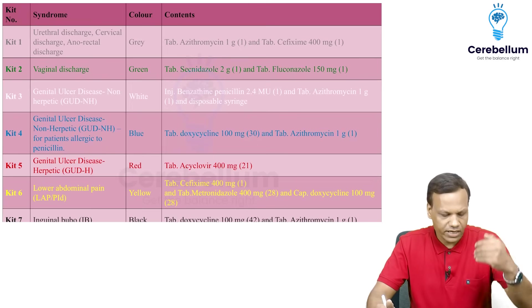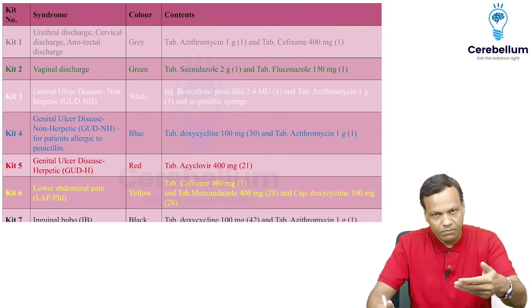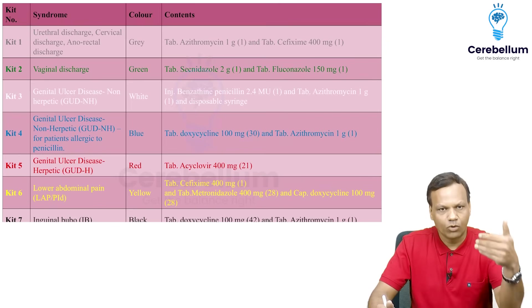So there are seven kits, they are named as kit 1, 2, 3, 4, 5, 6, 7 and these are given different color coding. So I have made the slide according to that color coding.